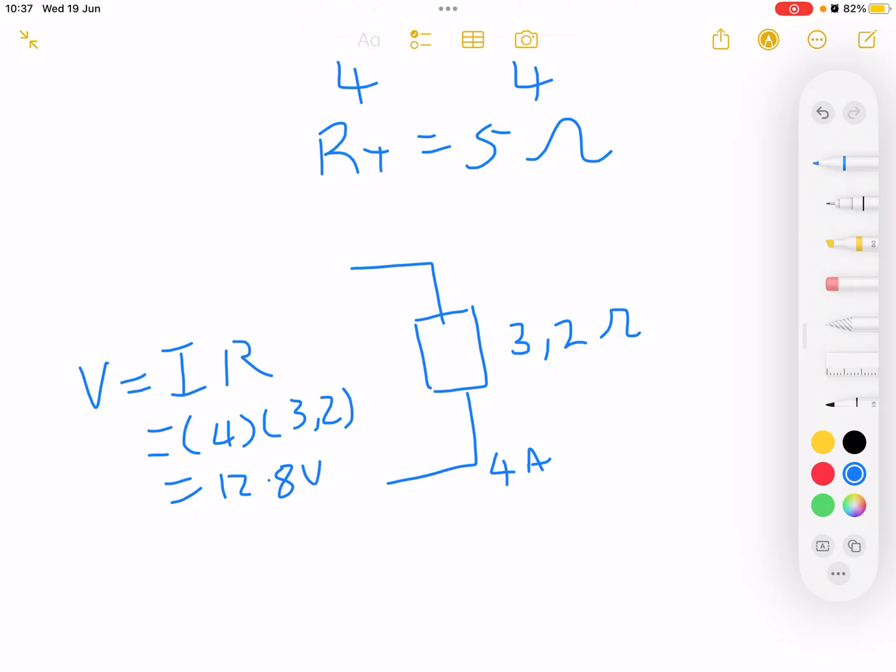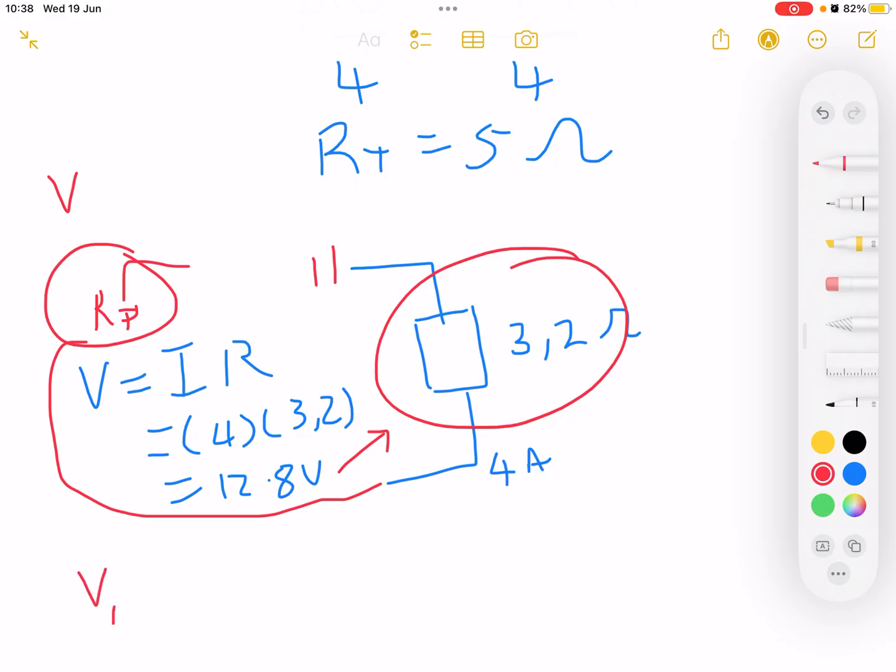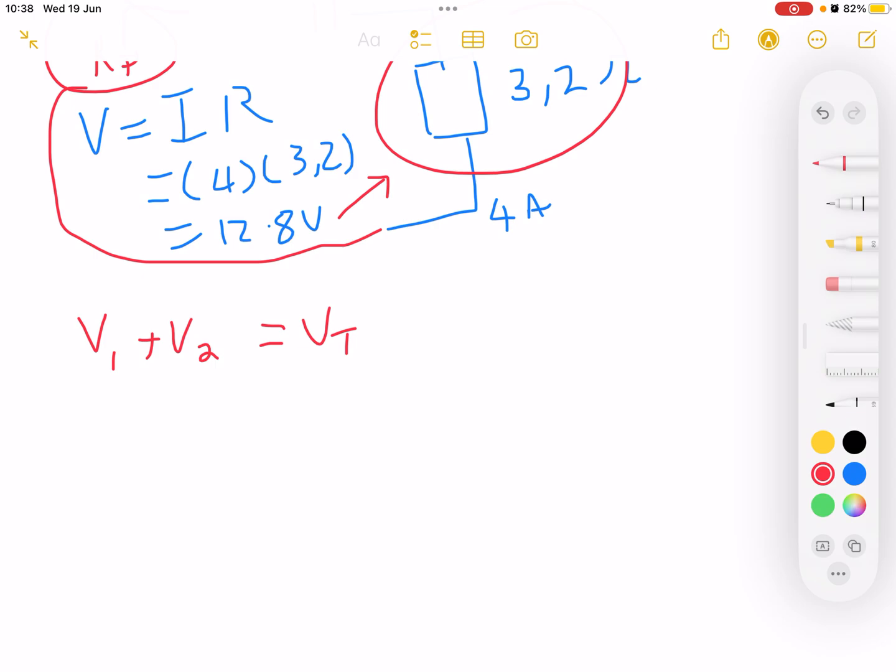This circuit goes to the parallel and to the switch, which means there is voltage being dispersed here and voltage we don't know here. But if we take V1 plus V2, we get the total voltage. V2 we've already calculated, V total we know. So V1 equals V total minus V2, which is 20 minus 12.8, and we get 7.2 volts.